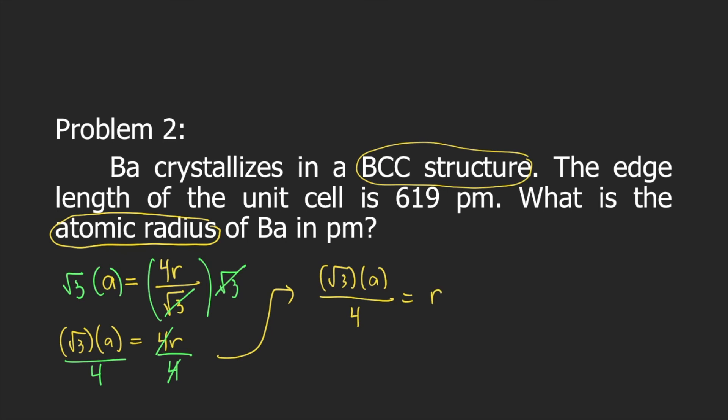Now that we have the equation for the radius, we can substitute the numbers. So square root of 3 times a is the edge length which is given in the problem, 619 p.m., divided by 4 is equal to r. Grab your calculators and type square root of 3 times 619 divided by 4 and r is equal to 268 picometers. And this is the atomic radius of barium.